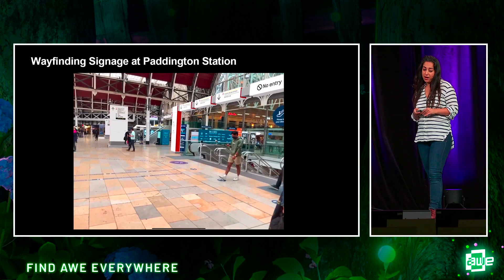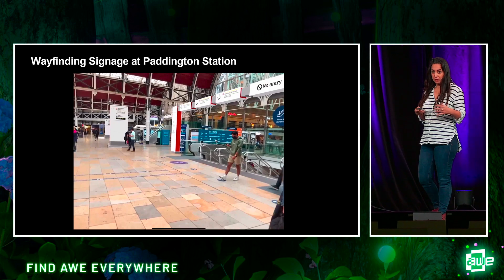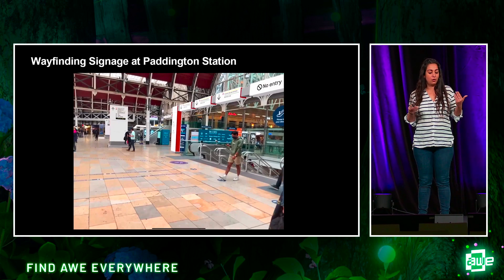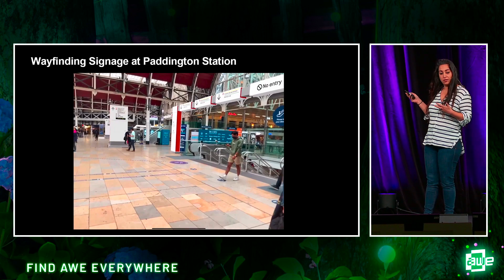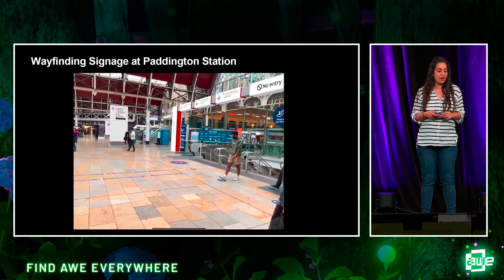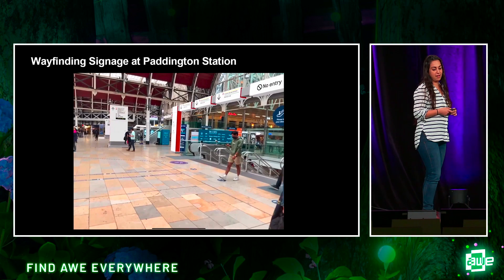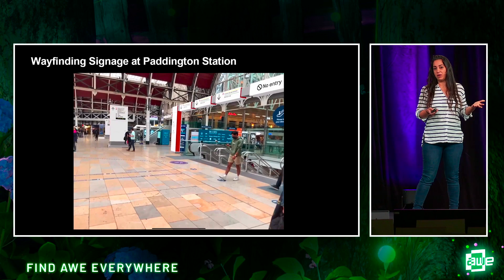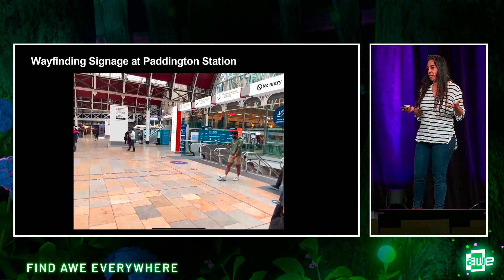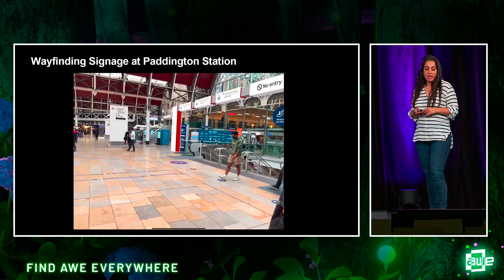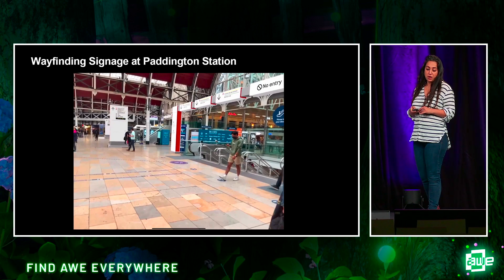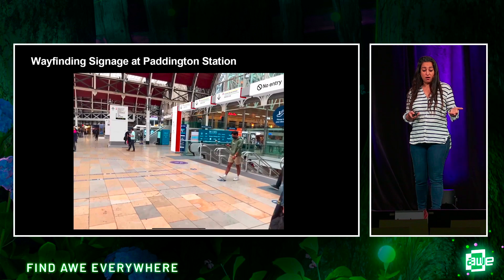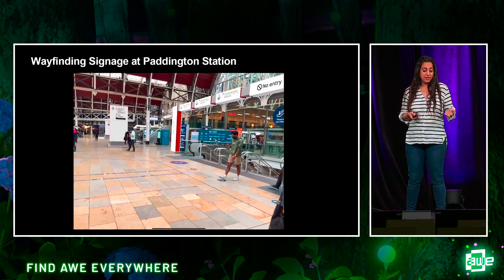If anyone's been to Paddington, it's one of the busiest stations in the UK. Although these shots look fairly empty — they were done at probably 5am — it was virtually impossible to get good camera tracking at busy times. And so it kind of taught us that essentially busy places can't really be augmented.